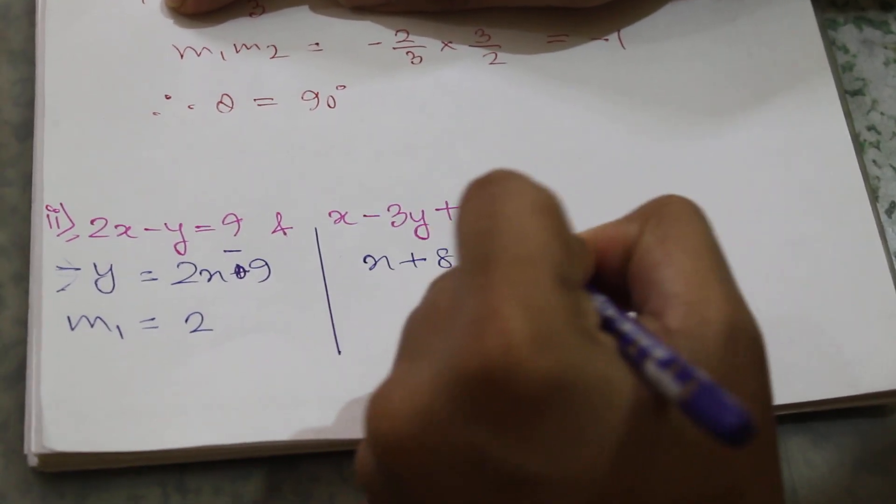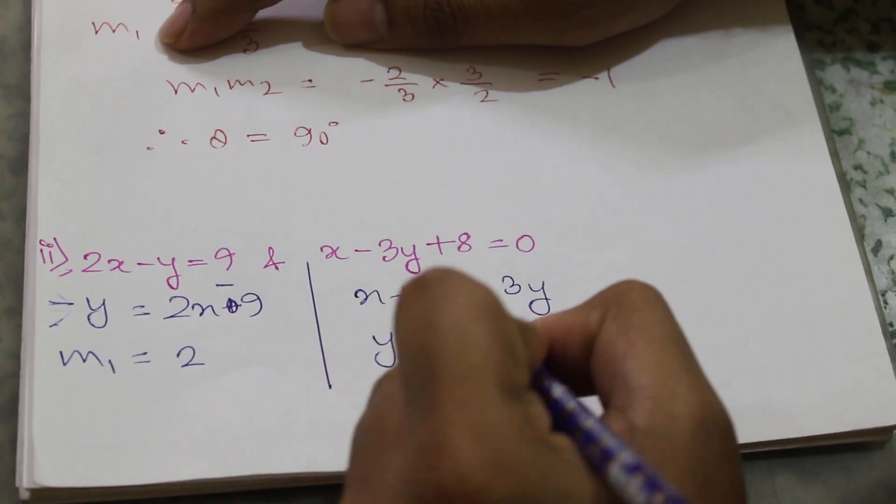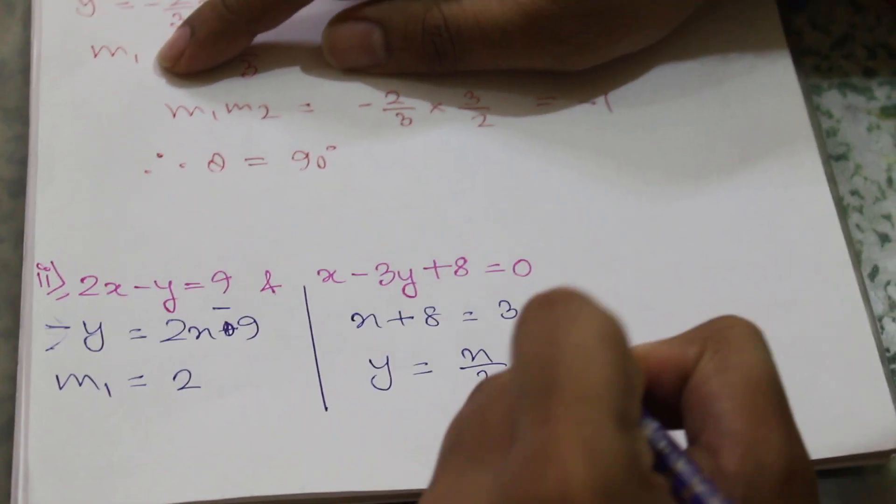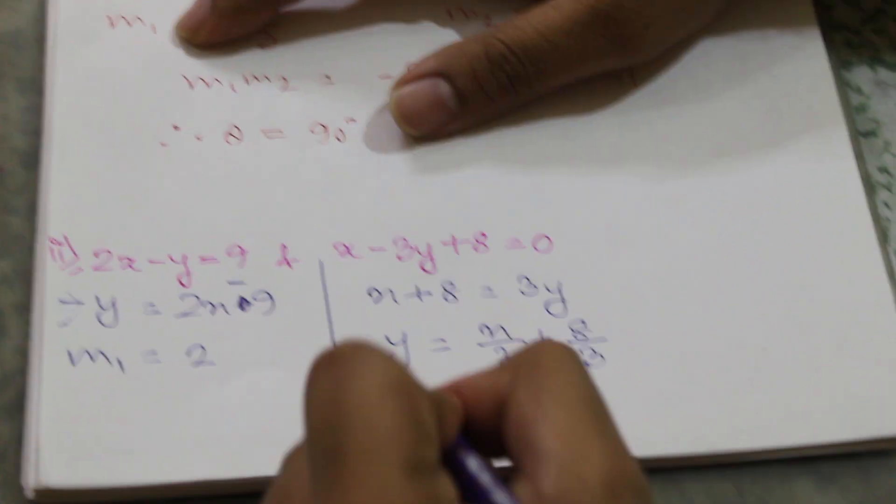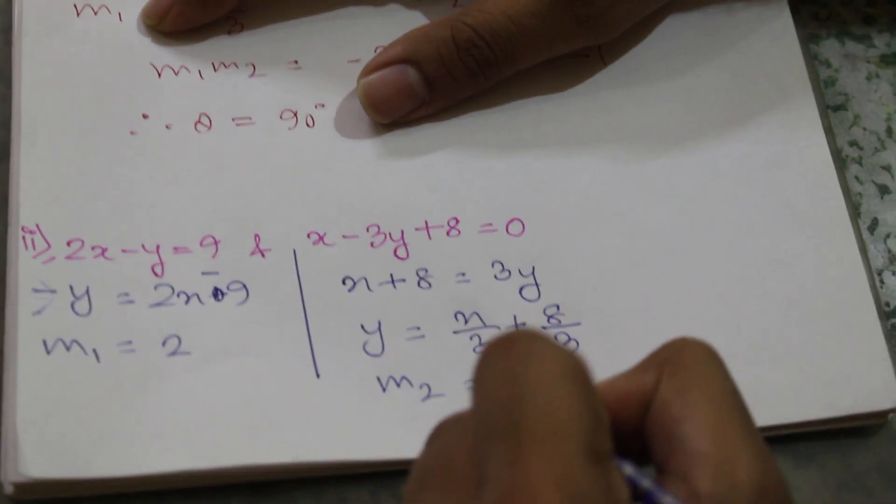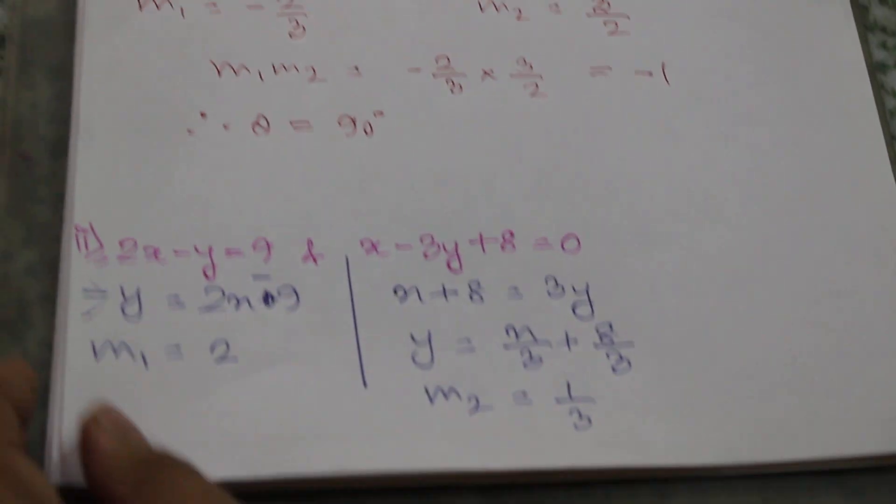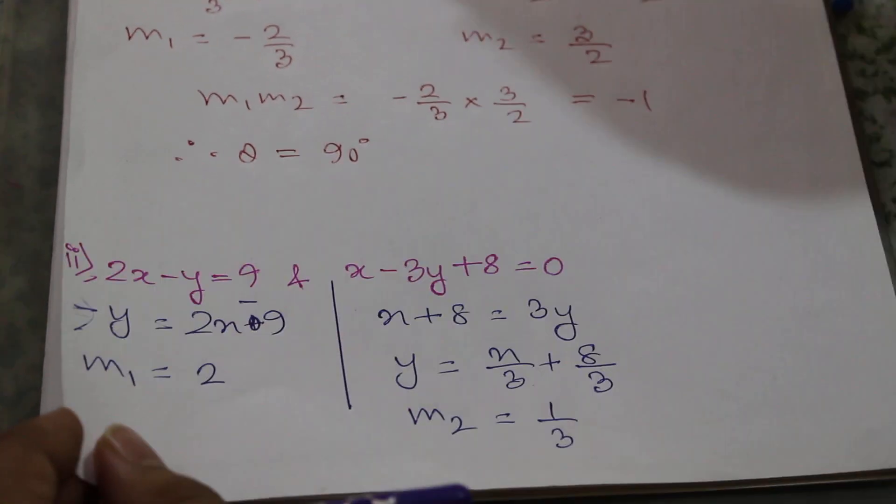From x - 3y + 8 = 0, we get x + 8 = 3y, so y = x/3 + 8/3. Therefore m2 = 1/3. Now we have calculated m1 and m2, so we will put these in the formula: θ = tan⁻¹(±(m1 - m2)/(1 + m1·m2)).